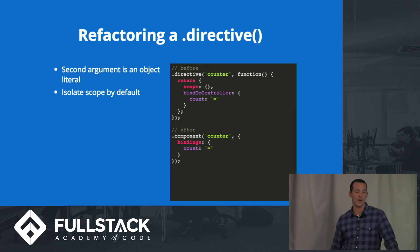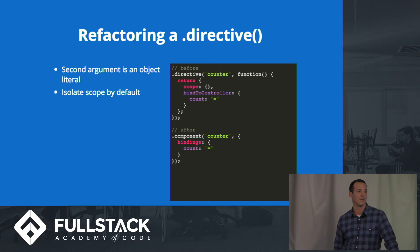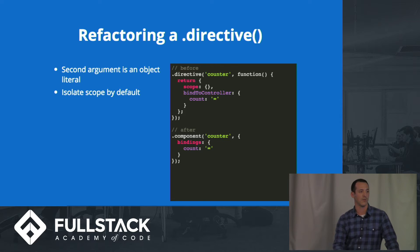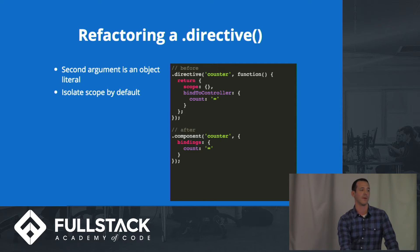By default, components have an isolate scope. So rather than having to declare an isolate scope for a particular directive and then pick what you want to bind to the controller, you automatically have that with this bindings object. So count, the number being put on there through its parent controller, is bound to the controller as we pass it through.